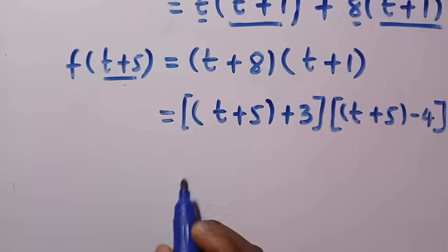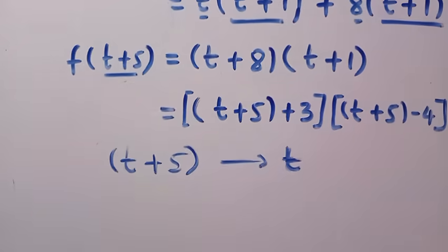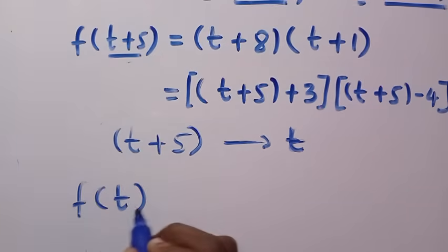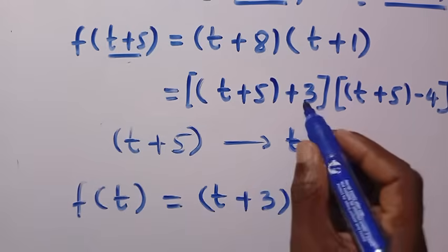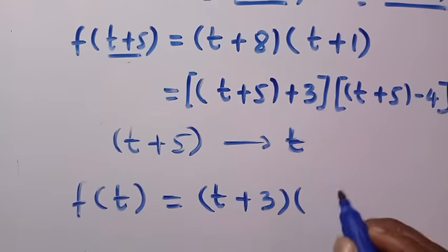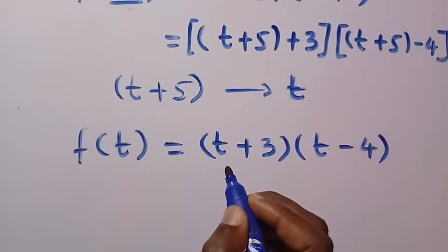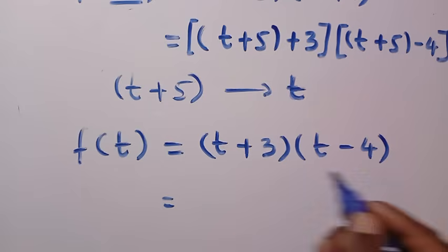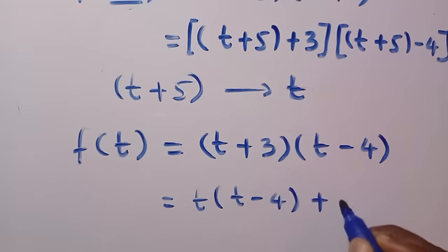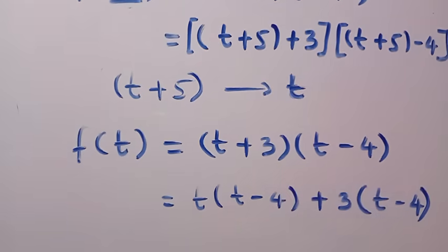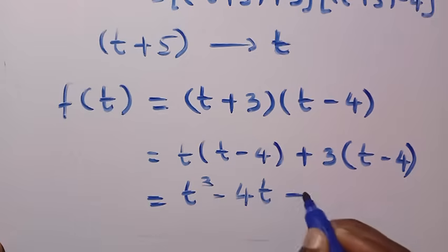Now we replace t+5 with just t throughout. So f(t) equals (t+3)(t-4). Expanding this: t times t gives t squared, t times minus 4 gives minus 4t, plus 3 times t gives 3t, and plus 3 times minus 4 gives minus 12.